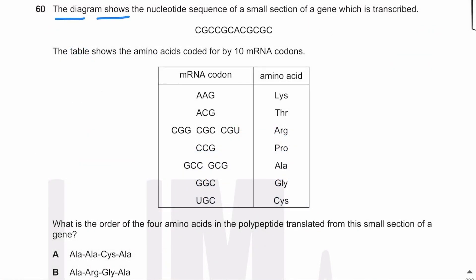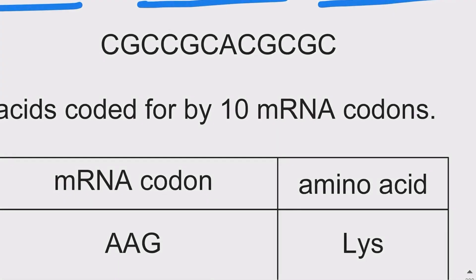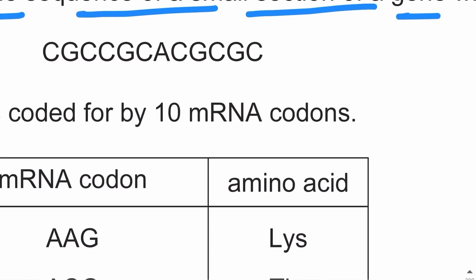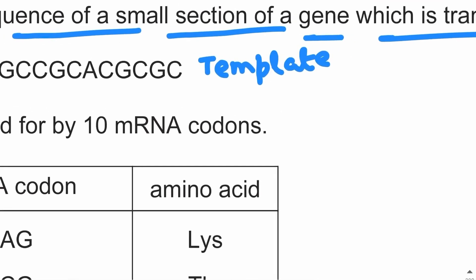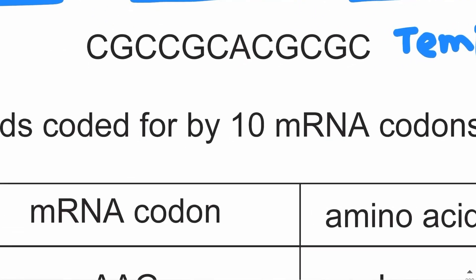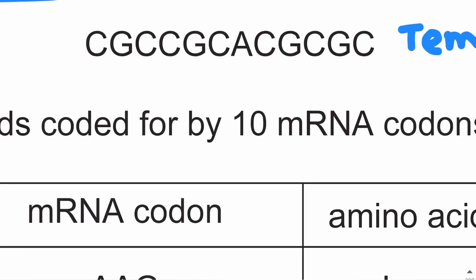The diagram shows the nucleotide sequence of a small section of a gene which is transcribed. This is the small section of the gene transcribed to make messenger RNA, meaning this is from the template strand. The template strand of the gene is transcribed to form messenger RNA. When this section is transcribed, a section of messenger RNA will be formed, so let's make the complementary sequence of the template strand.